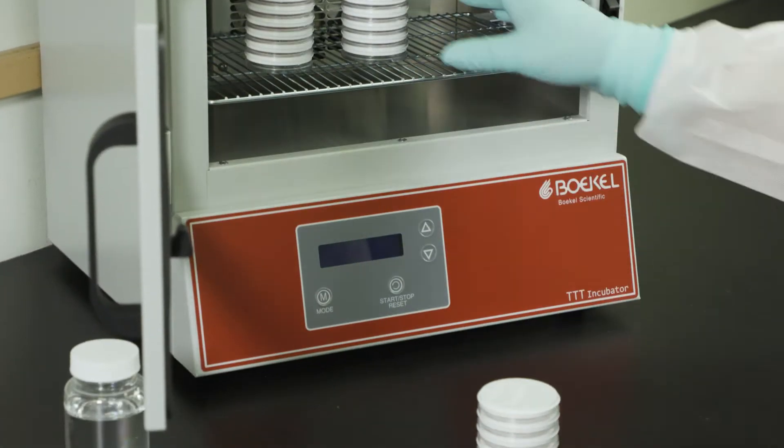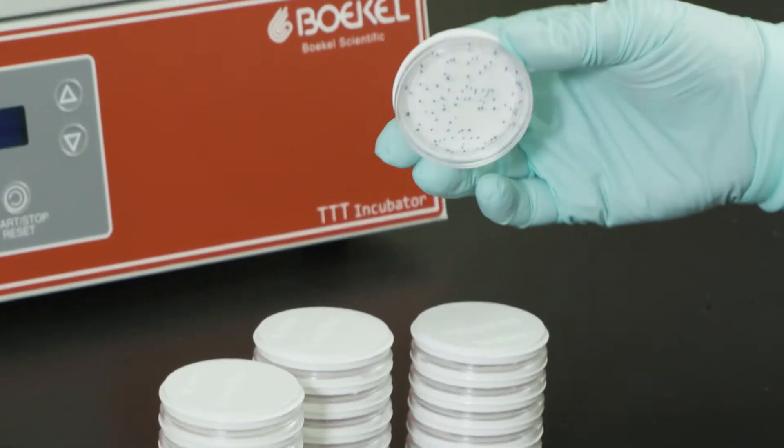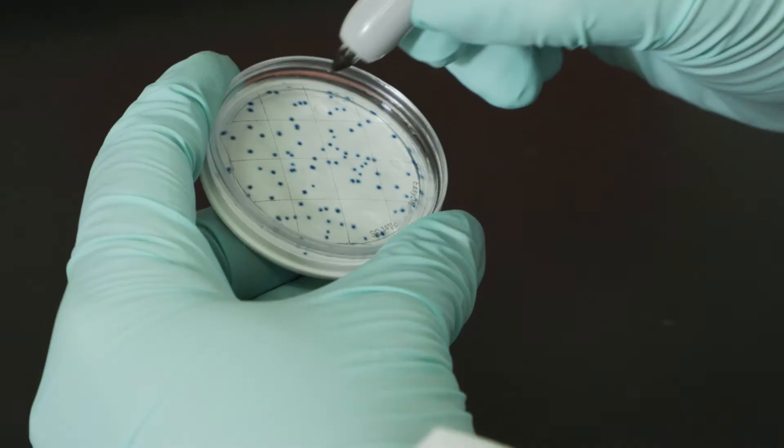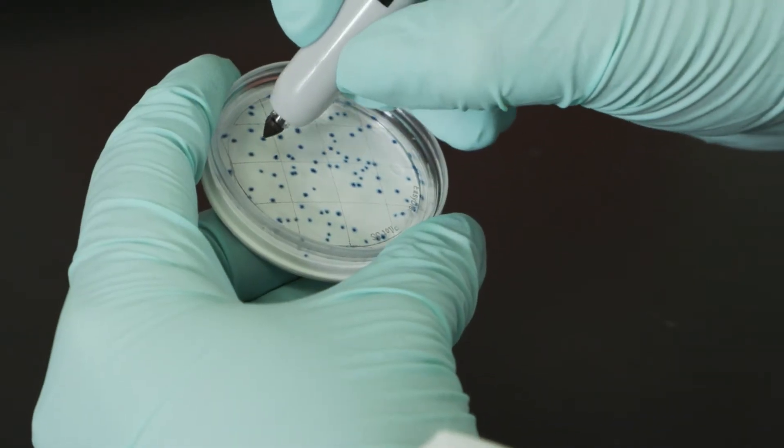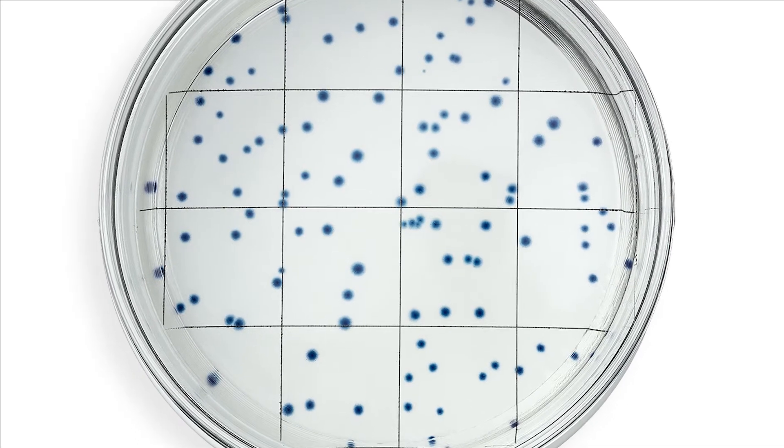Remove the plates from the incubator and immediately examine for colony growth. Sum all colonies for a result. Note that most colonies will produce a blue color and some will exhibit natural pigments. All colonies should be included in your result.